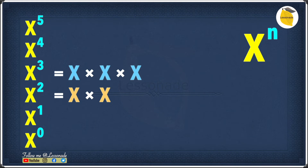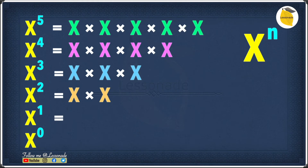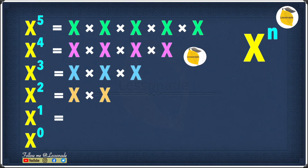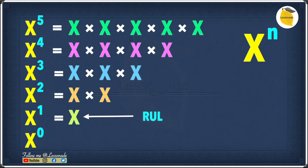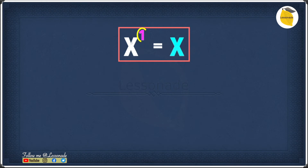Following the pattern, x to the power of 4 means multiplying 4 x's, and x to the power of 5 means multiplying 5 x's. So what about x to the power of 1? The pattern tells us that x to the power of 1 is just 1 x. This leads to an important rule: any number raised to the power of 1 is basically just itself.